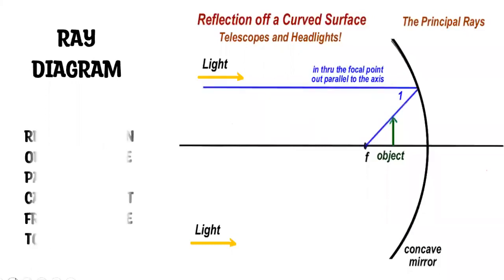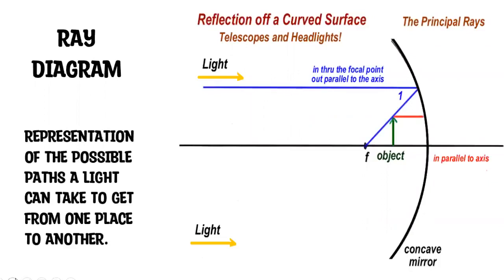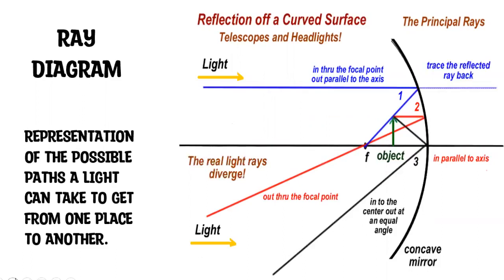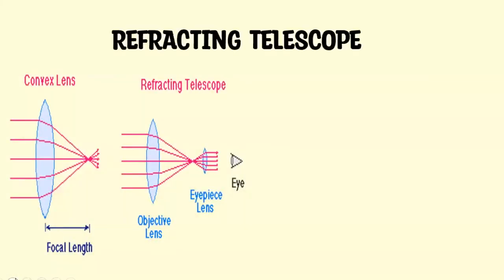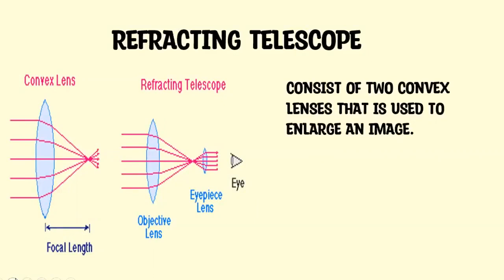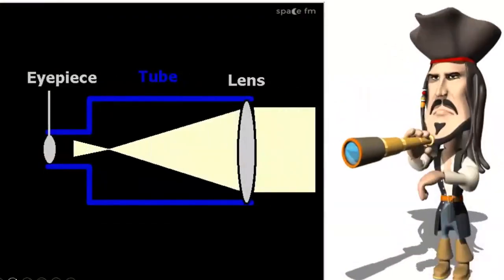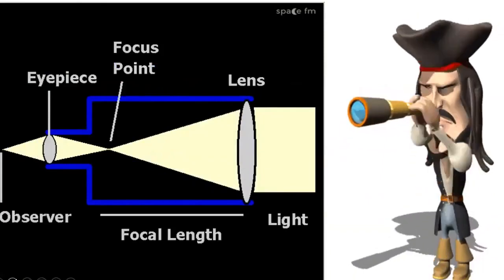A ray diagram is a representation of the possible paths light can take to get from one place to another, often from a source or object to an observer or screen. In situations involving two or more lenses, the image formed by one component can act as the object for another. This is true in the case of a refracting telescope. A refracting telescope consists of two convex lenses used to enlarge an image. It has a large primary lens with a long focal length to gather a lot of light. The lenses of a refracting telescope share a focal point, ensuring that parallel rays entering the telescope are again parallel when they reach your eye.